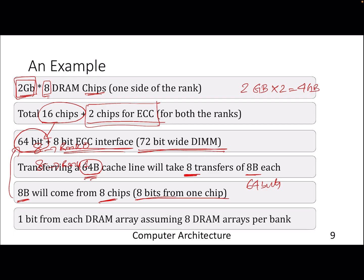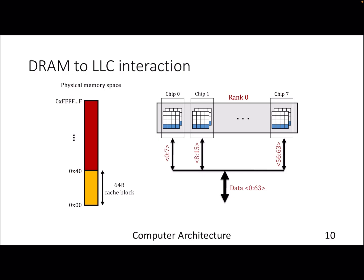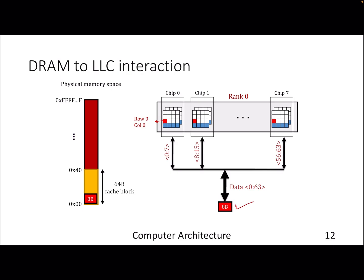Assuming one bit comes from each DRAM array and there are 8 DRAM arrays per byte, let's look at how DRAM interacts with the LLC. Given a 64-byte data at a particular address, we get an address that maps to rank, bank, rows, and columns. Assuming the address maps to row zero, it finds the column — say column zero — and transfers 8 bytes in one go. Then it moves to another column in the same row and sends another 8 bytes, and this process continues.